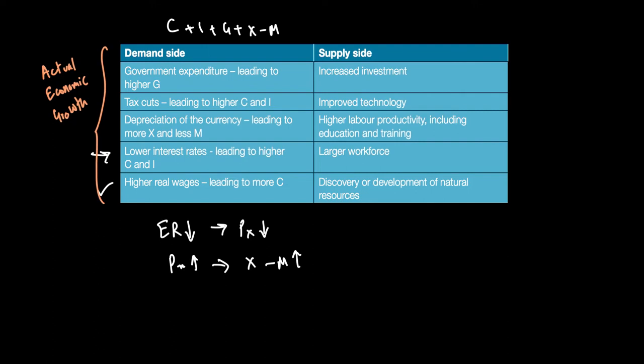On the supply side, there will also be changes that can take place, which is our potential output going up, or LRAS shifting out, or PPC shifting out. Any improvement in the quality or quantity of factors of production can lead to such economic growth. For example, higher investment means more funds dedicated to the production of capital goods.